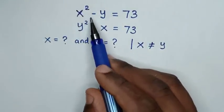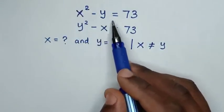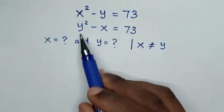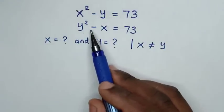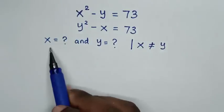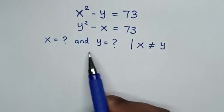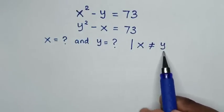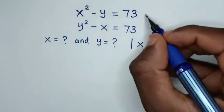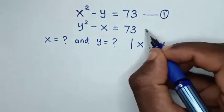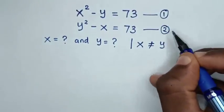How to solve x squared minus y is equal to 73, and y squared minus x is equal to 73, to find the value of x and y such that x is not equal to y. We let the first expression equation 1 and the second equation 2.